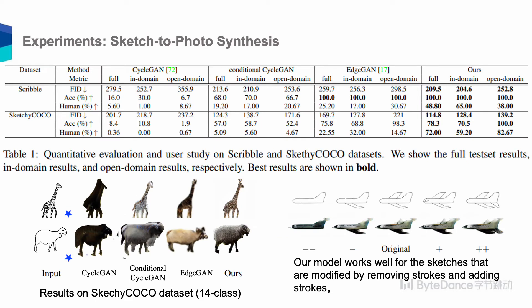As shown in the experimental results, the outputs of our model are preferred by more users than other compared methods, and achieve the best results in terms of FID score and classification accuracy on all datasets. Our randomly mixed strategy improves not only the open domain results, but also the in-domain results.